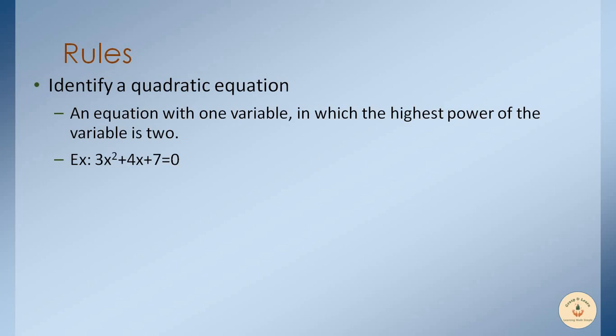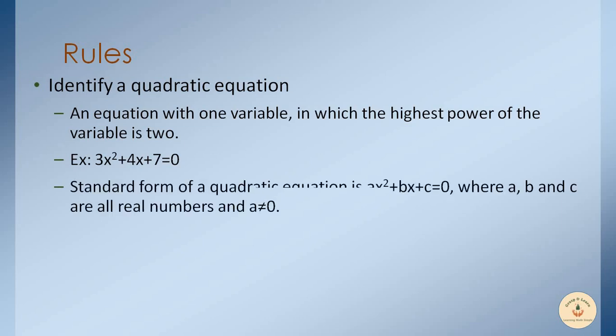For example, 3x² + 4x + 7 = 0 — here x is the unknown variable and its highest power is 2, so it satisfies the first rule. Secondly, the standard form of this equation is ax² + bx + c = 0, where a, b, and c are all real numbers and a is not equal to 0.